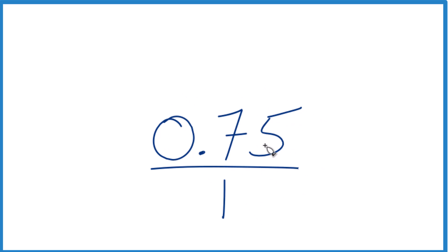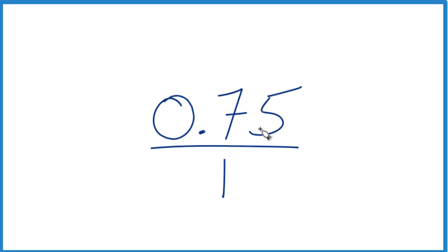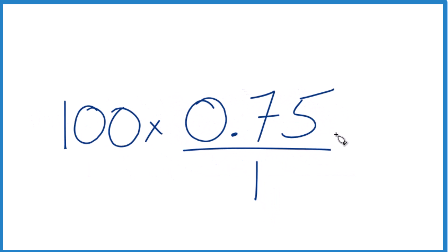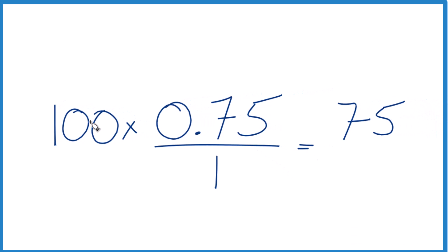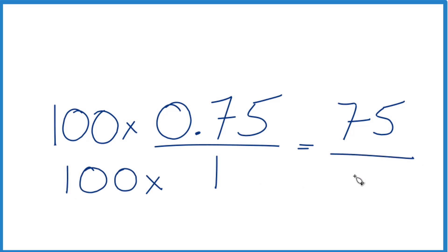Now we just need to get 0.75 to a whole number. Here's the trick: you can do something to the numerator as long as you do the same thing to the denominator. If I multiply by 10, that gives me 7.5. If I multiply 0.75 times 100, that gives me 75 — a whole number. So 100 times 0.75 equals 75. Because we did this to the numerator, we have to do it to the denominator too, so we multiply that by 100 as well. 100 times 1 gives us 100.